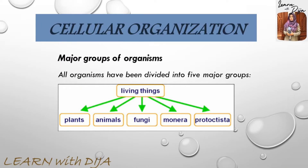In cellular organization, there are five major groups in which organisms are divided. Every living thing has five major subgroups: plants, animals, fungi, Monera, and Protista.